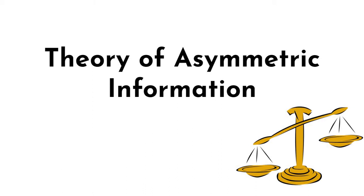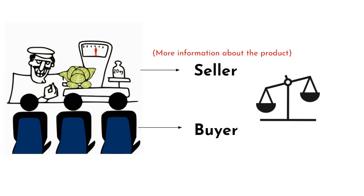Hello and welcome to my channel. In this video, we will learn about the theory of asymmetric information. Asymmetric information, or information failure, occurs when one party in a transaction has more information than the other party involved.